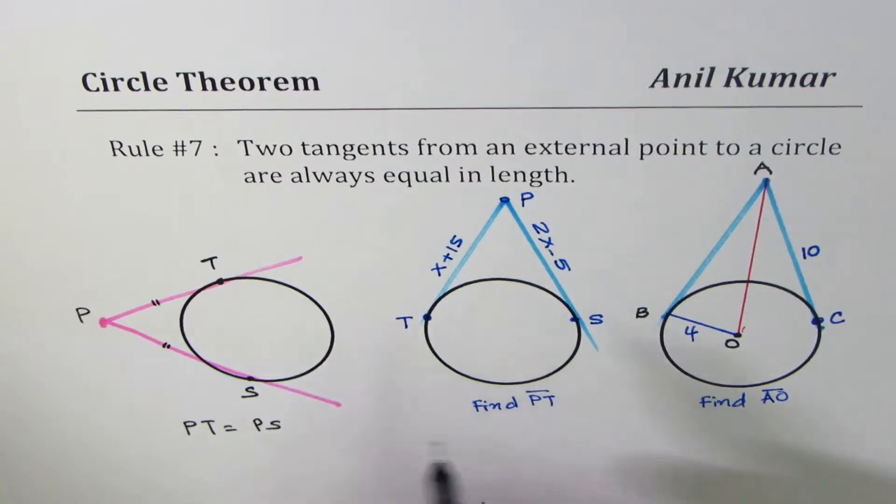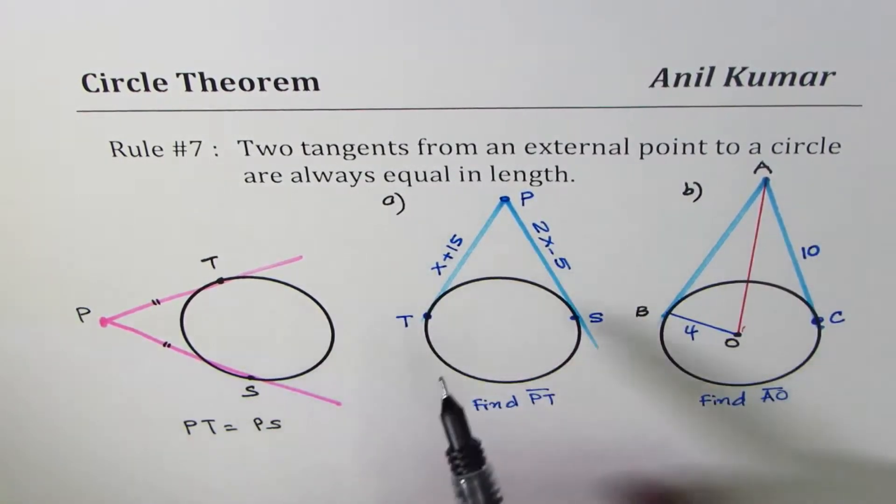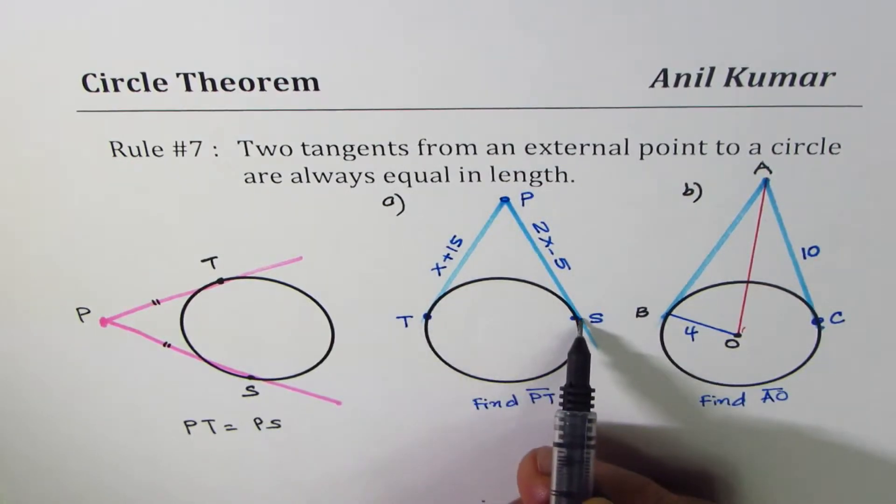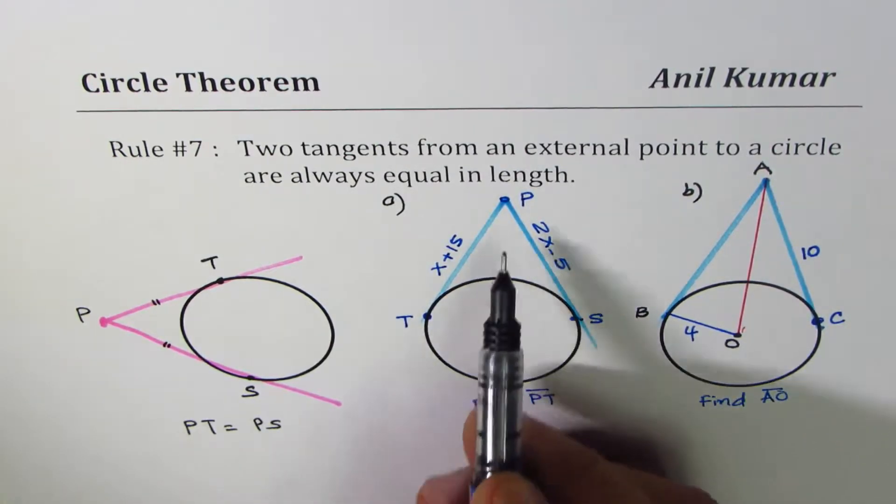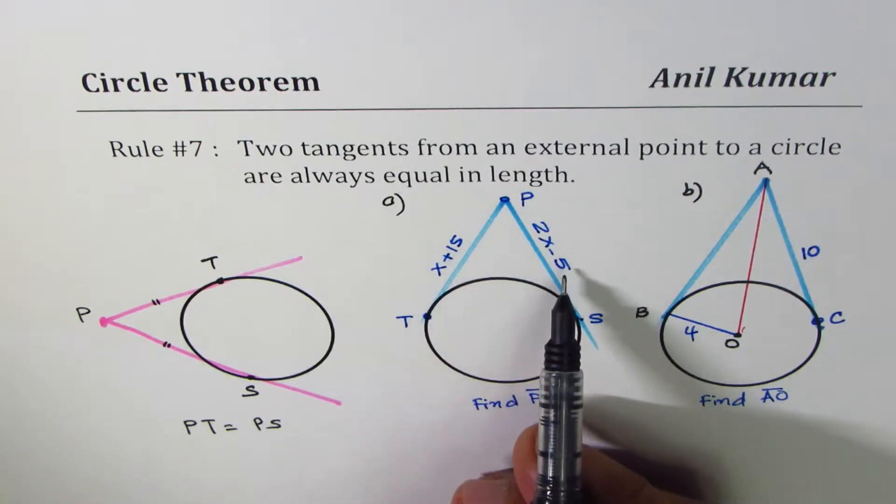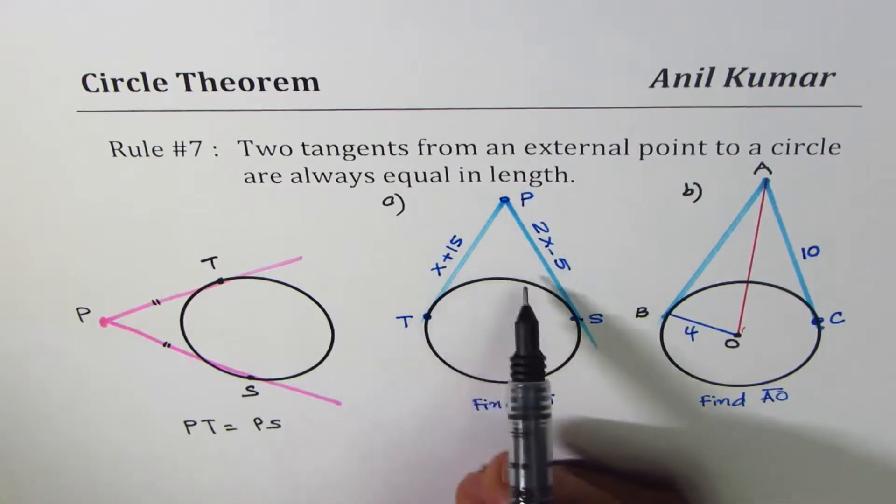The question here is, let's say A, and this is question B. In part A, we are given two tangents to the circle, length of which are x plus 15 and 2x minus 5. You need to find length of each tangent.